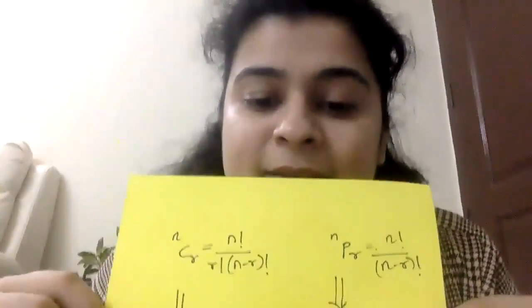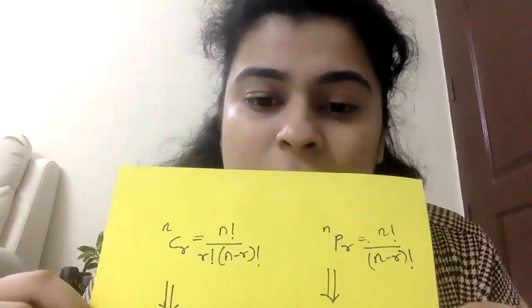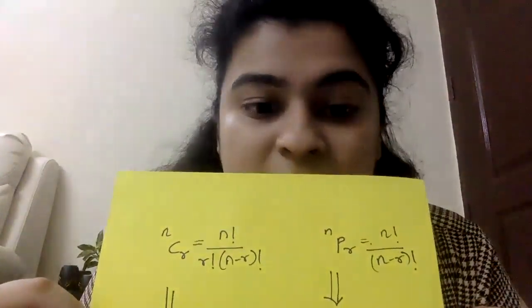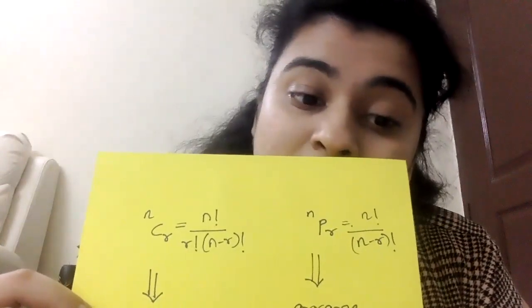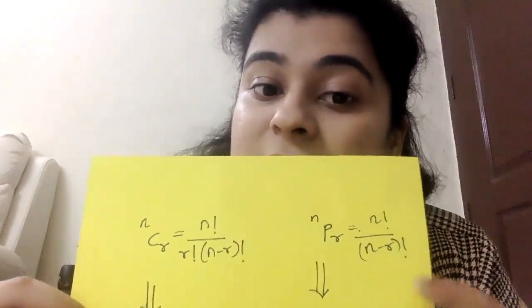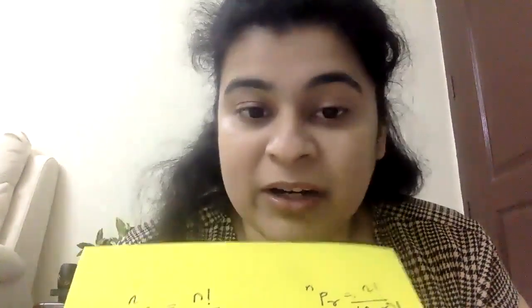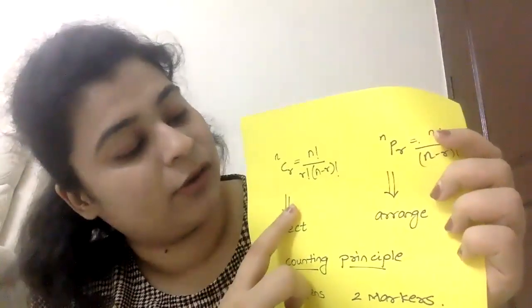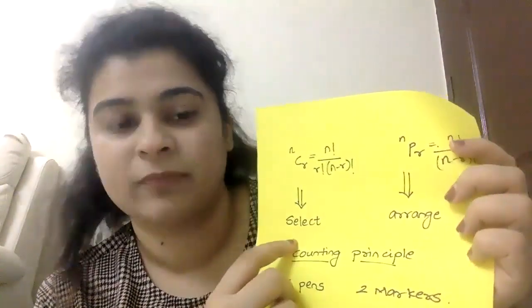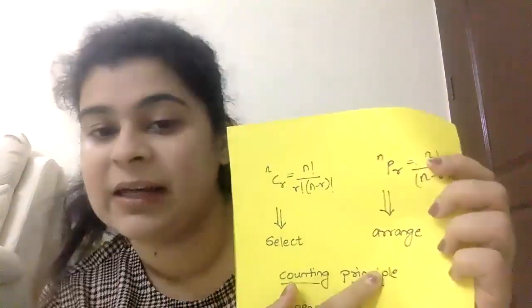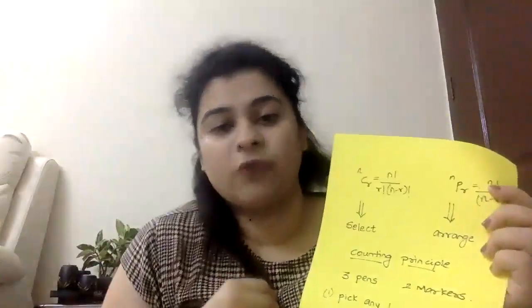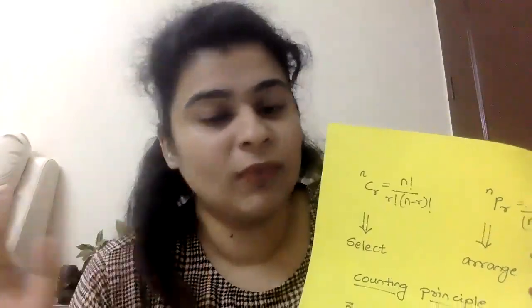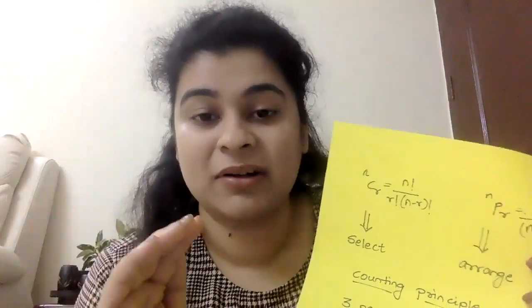Remember: nCr = n! / (r! × (n−r)!), and nPr = n! / (n−r)!. When do we use them? nCr is when we are making a selection, nPr is when we are making an arrangement. This is what P&C essentially is — you need to understand usage and application. I personally don't like rote memorization of formulas, so let's set that aside.